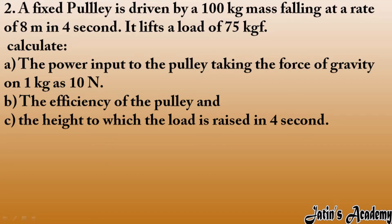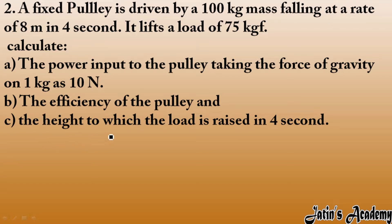2nd question: a fixed pulley is driven by a 100 kg mass falling at a rate of 8 meters in 4 seconds. It lifts a load of 75 kgf. Calculate the power input to the pulley, taking the force of gravity as 10 newton per kg (g = 10 m/s²), the efficiency of the pulley, and the height to which the load is raised in 4 seconds.